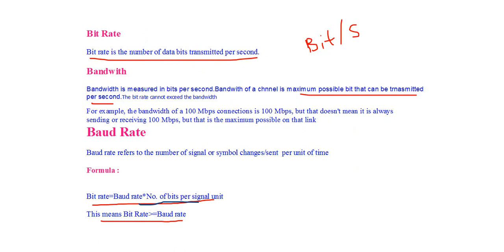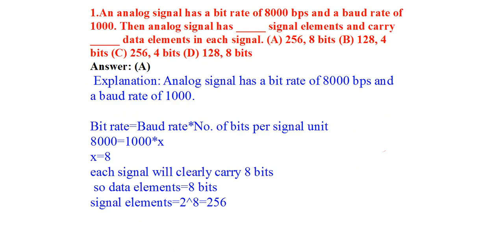Let us clarify this with an example from the UGC NET exam. The question is: an analog signal has a bit rate of 8000 bps and a baud rate of 1000. The analog signal has how many signal elements and carries how many data elements in each signal? Using the formula bit rate = baud rate × number of bits per signal unit: 8000 = 1000 × x, so x = 8. Each signal carries 8 bits.